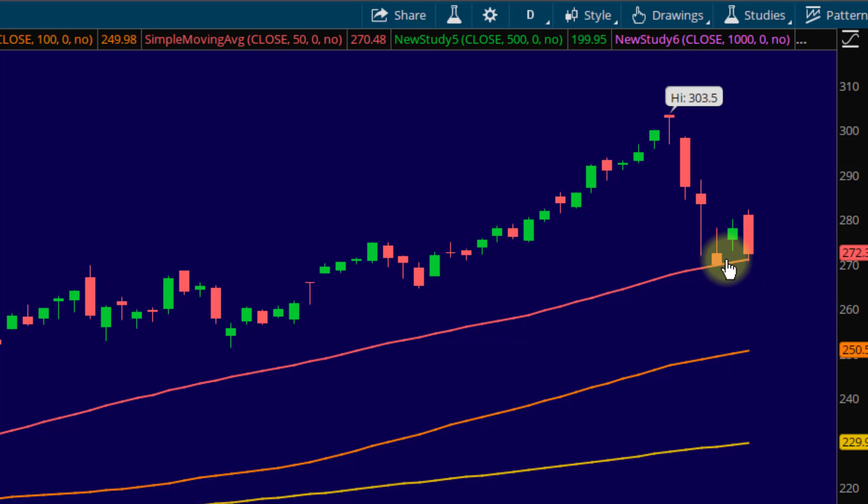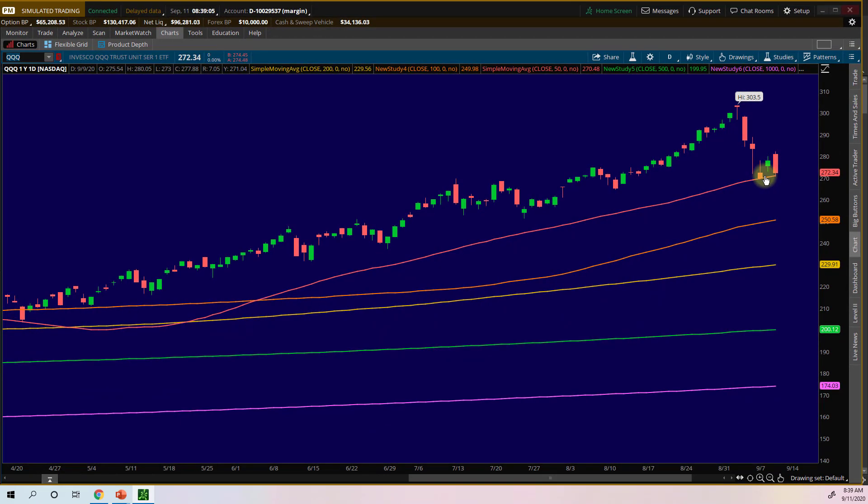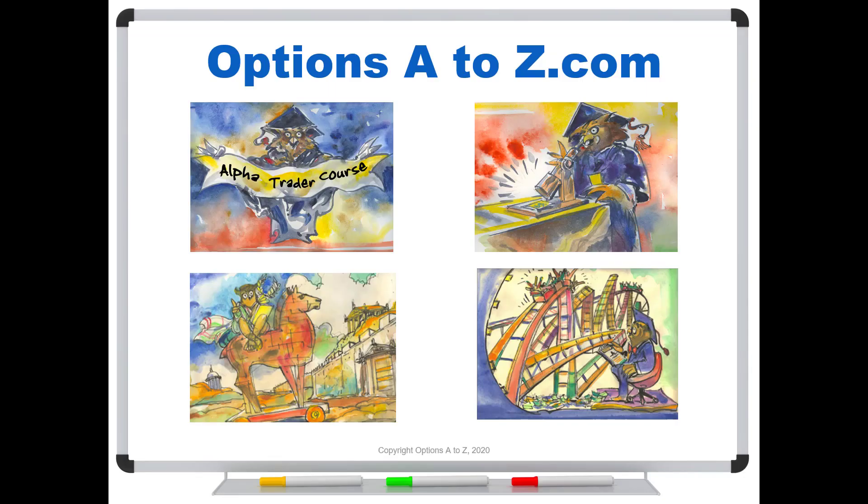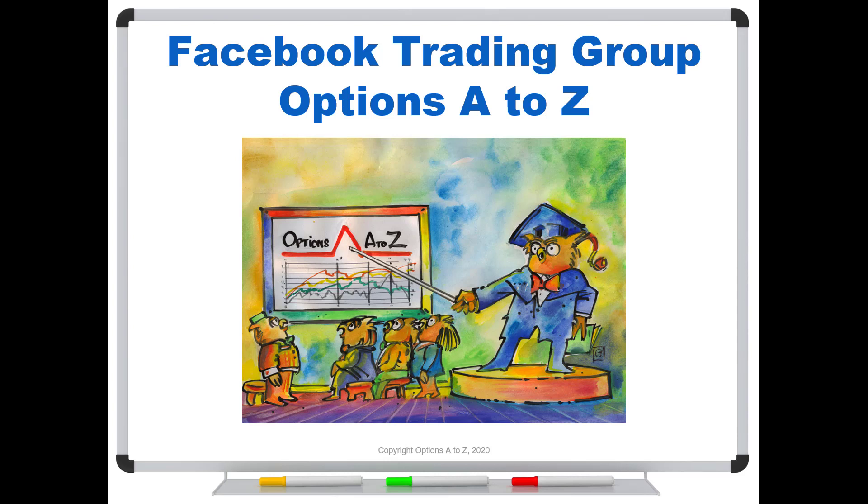So if you like the idea of candlesticks but aren't real sure how they work I do have a training course on my website which will explain all the ins and outs and the powerful signals you can get from understanding candlesticks. So for anyone who'd like to learn more about the arts and science of options trading please check out the alpha trader course and strategy lab as well as the candlesticks course all at options a to z dot com. Also please join us on the facebook trading group options a to z and you can find a link in the description below.